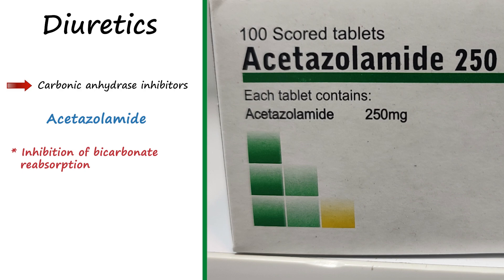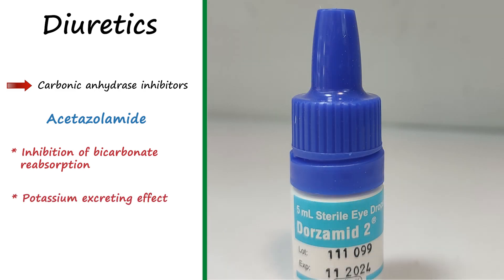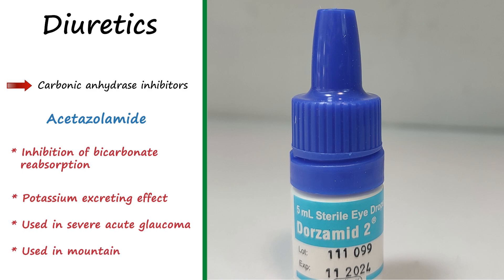In the lumen, water will be secreted from cells following bicarbonate retention. These diuretics also cause potassium to be excreted and wasted significantly. Acetazolamide is mostly used in severe acute glaucoma and can also be used to prevent acute mountain sickness or high altitude sickness. As a diuretic, it is used only if edema is accompanied by significant acidosis or high potassium levels in the body.